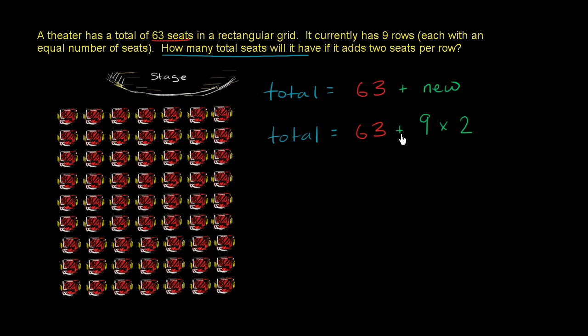And we'll talk more about order of operations. But clearly, in this situation, we want to multiply 9 times 2 to figure out the total new number of seats. And then we want to add that to 63.